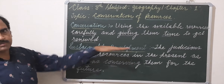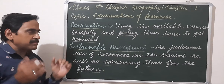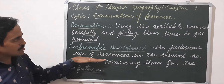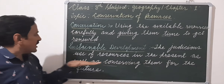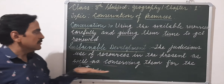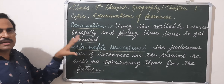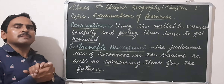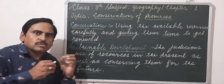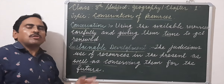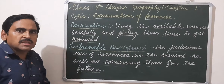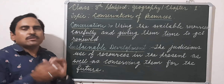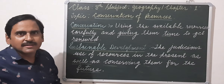The second topic is sustainable development. What does sustainable development mean? It means the judicious — that is, careful — use of resources in the present, as well as conserving them for the future. It means we should not consume all the resources at present. We should use resources in such a way that all present needs are fulfilled, and resources are also left for future generations.